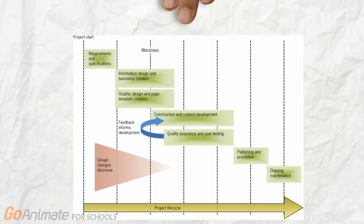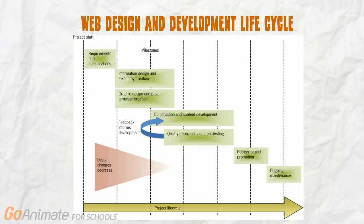The web design and development life cycle is the most important process. It includes the following key steps: 1. Customer requirements and specification. 2. Information design and taxonomy creation. 3. Graphic design and page template creation. 4. Construction and content development. 5. Quality assurance and user testing. 6. Publishing and promotion. 7 & 8. Ongoing maintenance. Professional web developers always follow these steps for a successful web project.